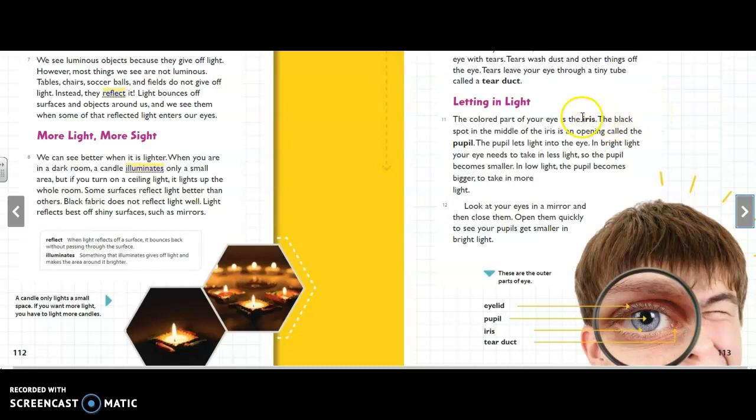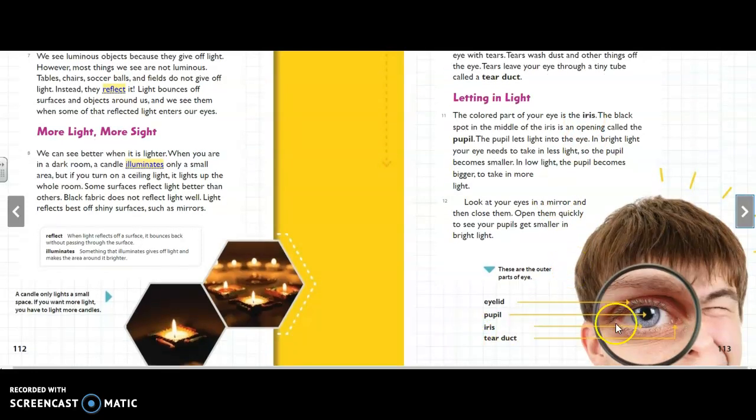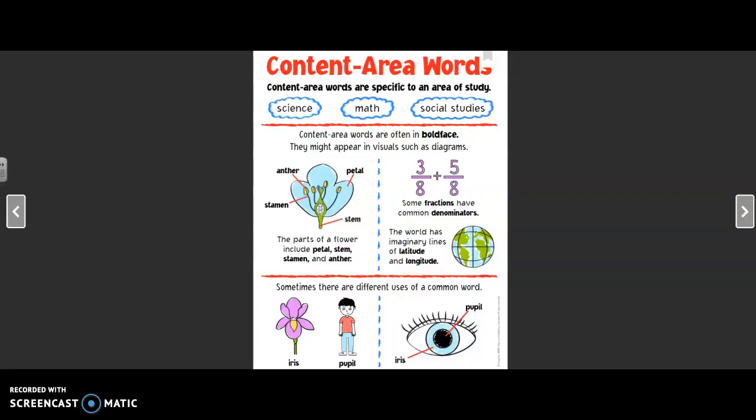So what clues are around this word iris to help you know what it means? If you read the text around it, the colored part of your eye is the iris. And then down here if you look at the diagram you see it pointing to the colored part of your eye. So be looking for these content area words and jot them down as you're reading in your My Book.